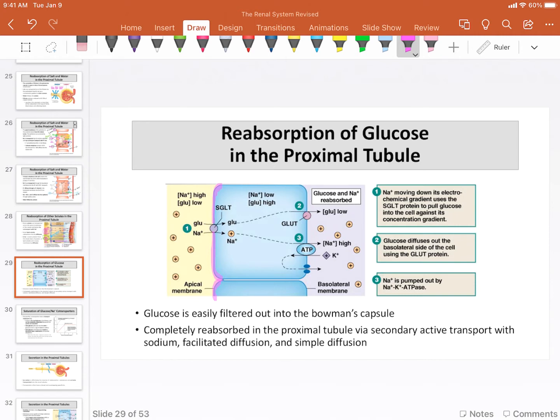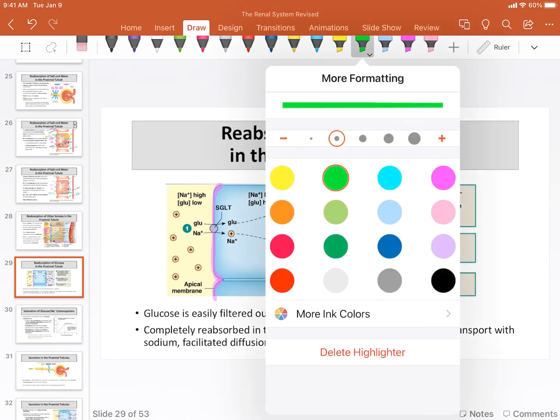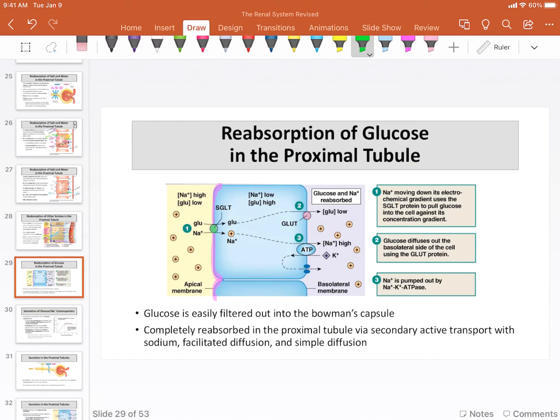On the apical membrane, we have our transporter SGLT. Now this SGLT stands for sodium glucose transporter. That SGLT is a type of co-transporter that can move glucose from low concentration to high concentration.